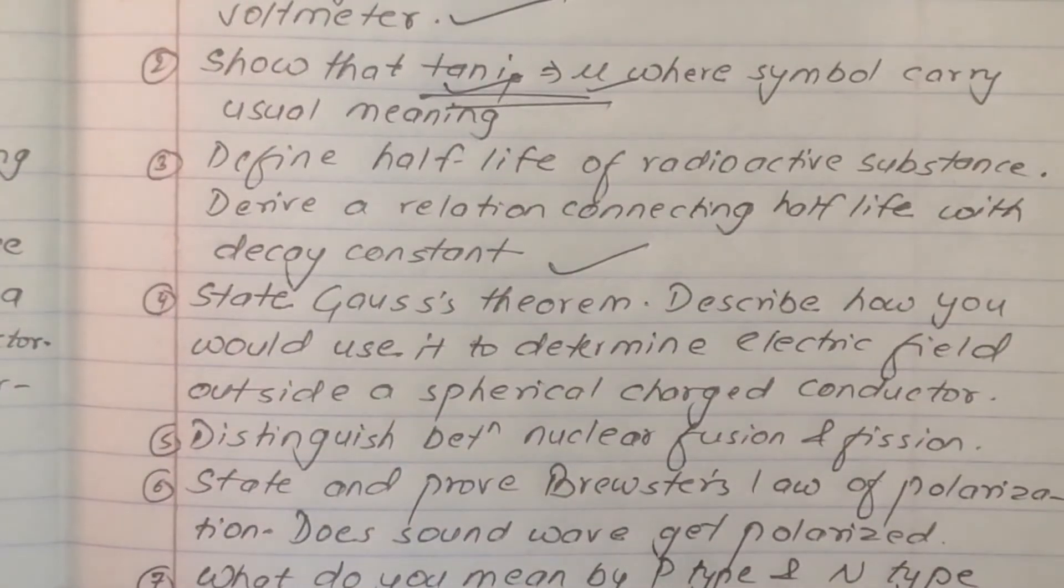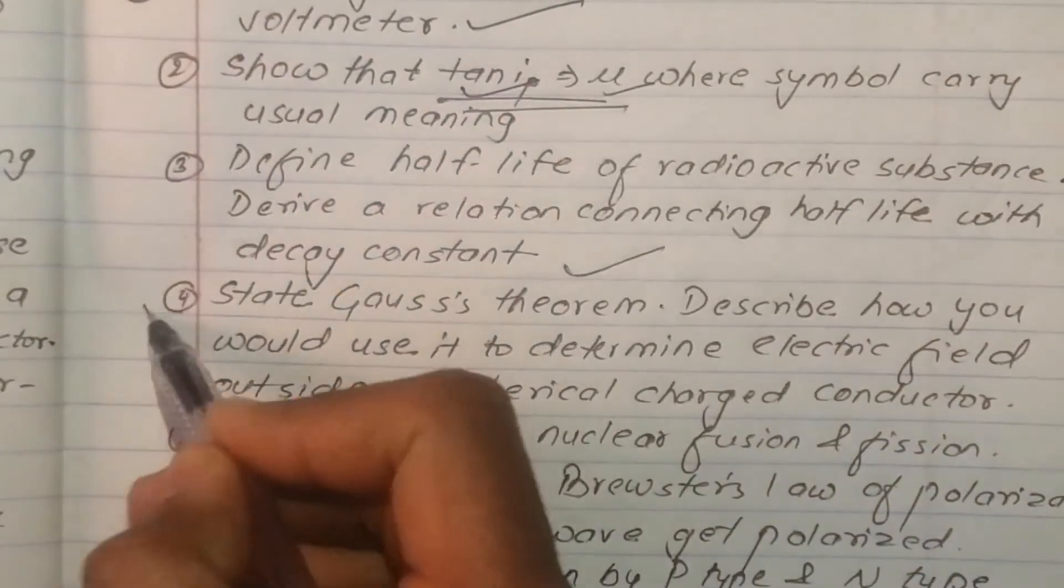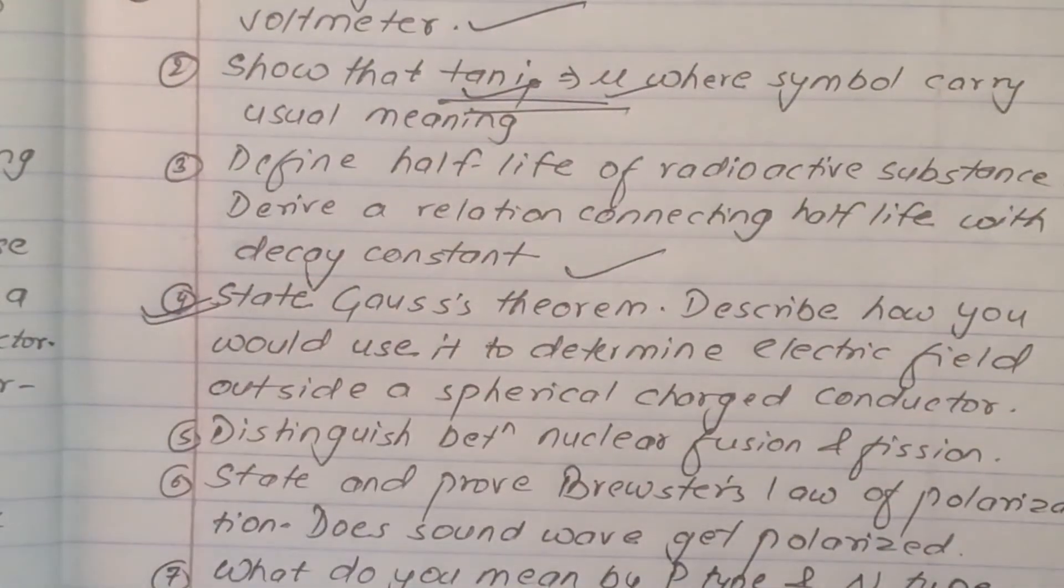Gauss theorem: Describe how you would use it to determine electric field outside the specific charge conductor.